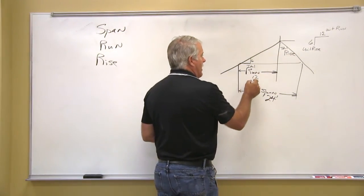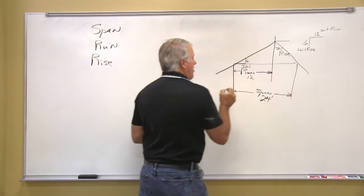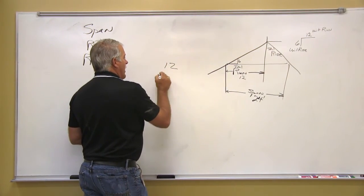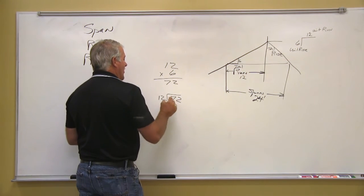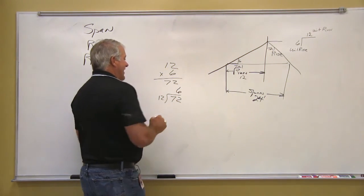I need to take my total run times the unit rise. So 12 times 6, 72. So we're going to divide that and that is 6.